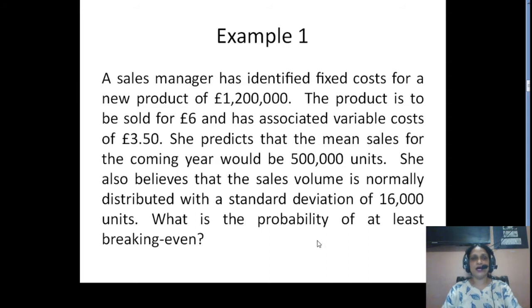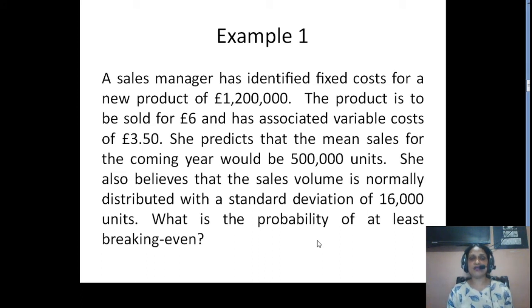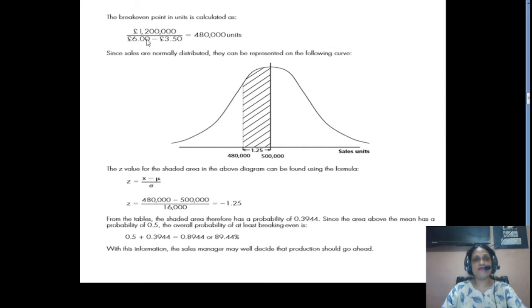We will discuss how we can utilize the concept of normal distribution to tackle the impact of risk and uncertainty. Example: A sales manager has identified fixed cost for a new product as £12 lakhs. The product is to be sold for £6 and has an associated variable cost of £3.50. She predicts that the mean sales for the coming year would be 5,00,000 units, and also believes that the sales volume is normally distributed with a standard deviation of 16,000 units. What is the probability of at least breaking even?